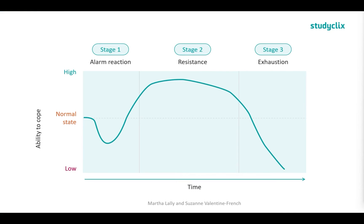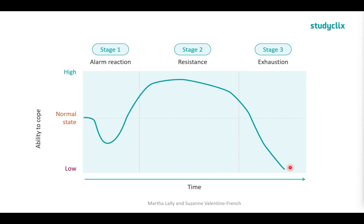This diagram will help us understand the model a bit more. Stage one is alarm reaction, where our ability to cope goes below normal levels as we enter shock, then rises back up into counter-shock. Those are the two parts of alarm reaction. Then, as shown by the line, our ability to cope goes above normal levels — that is resistance. And as we hit exhaustion, it starts to go back down below normal levels.